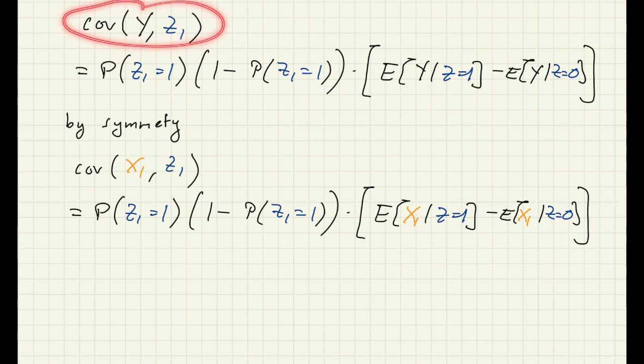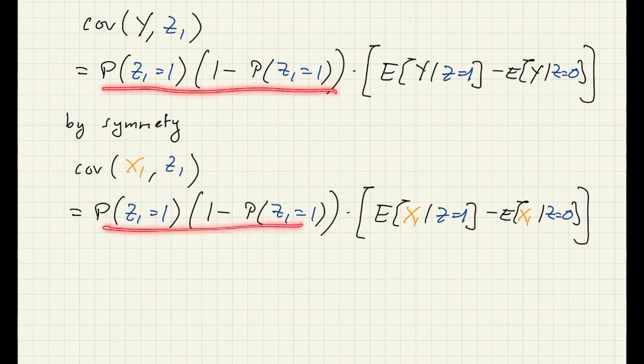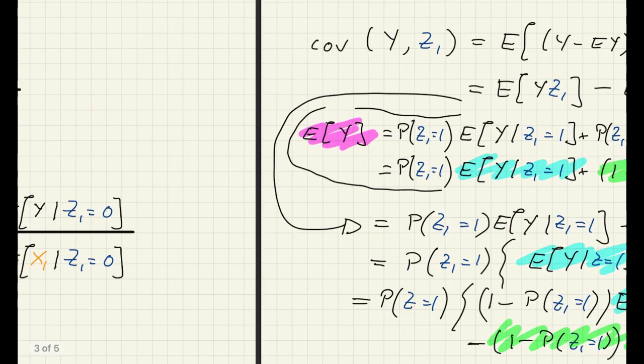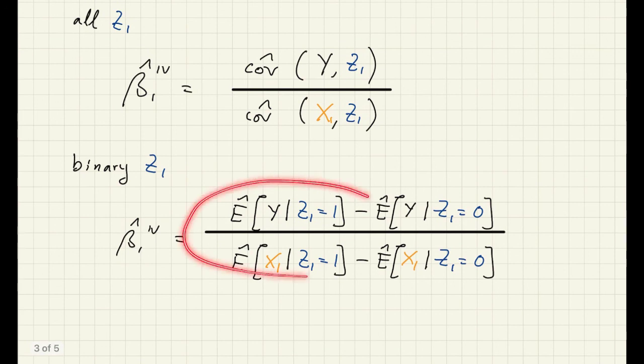Now if you go ahead and divide this by this, what is going to happen? Well, this here will just cancel. And then we'll have this in the numerator, we'll have this here in the denominator, and voila, this is exactly what we wanted to get.